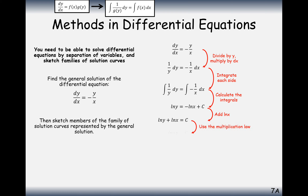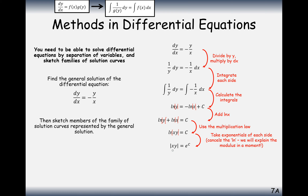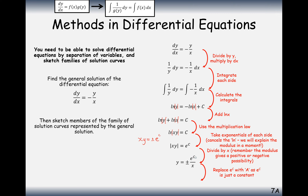We add ln|x| onto the other side and tidy up. Using the laws of logs, adding ln's means multiplying x and y together, so we get ln|xy| equals c. We then undo the ln by raising e to both sides. Since |xy| equals e to the c, xy is equal to plus or minus e to the c. Dividing by x gives y equals plus or minus e to the c over x. Since e to the c is just a constant, we can replace it with capital A, giving y equals plus or minus A over x.